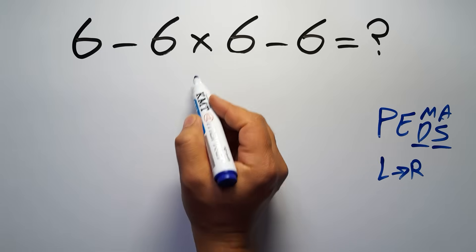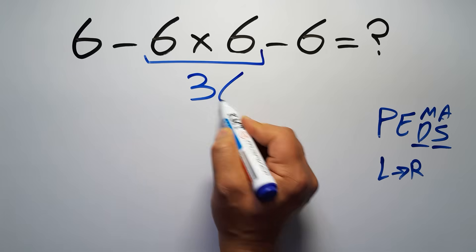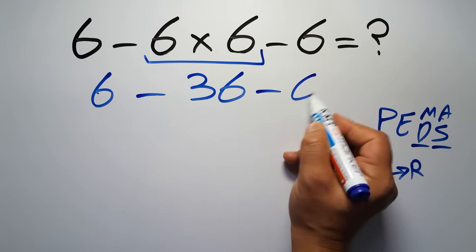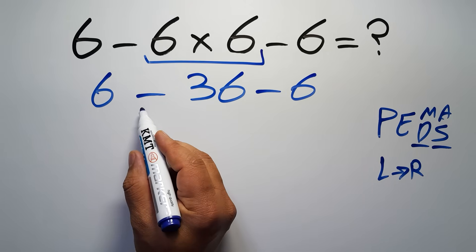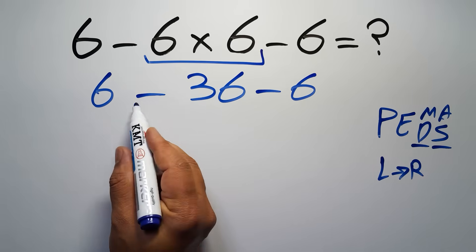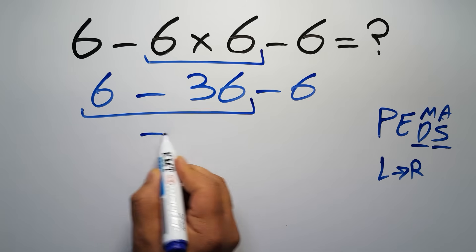So first this multiplication: six times six gives us thirty-six, so six minus thirty-six minus six. Now we have two subtractions, and when we have more than one subtraction in an expression, we have to work from left to right. So here first we have to do this subtraction: six minus thirty-six gives us negative thirty.